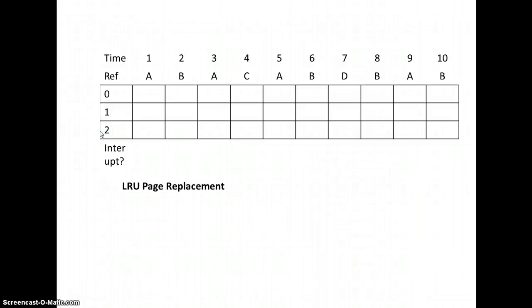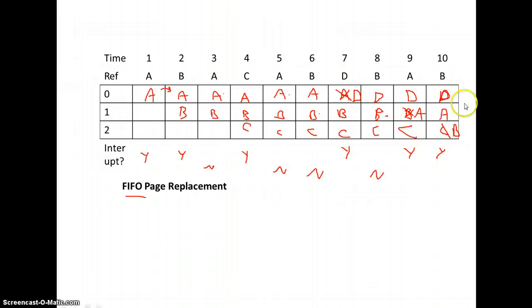Hi, this is Stephen Brower. In the prior video, we took a look at how we create one of these page frame reference tables. We also looked at the first in, first out page replacement algorithm. So where we ended up at the end of that last video was our table looking like this, and we kept track of where we hit interrupts and where we didn't.